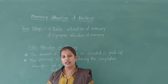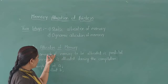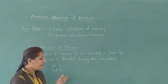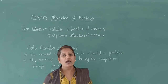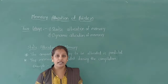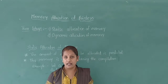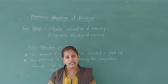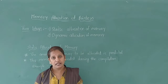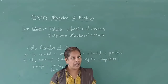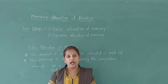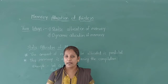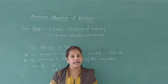In static memory allocation, the amount of memory to be allocated is predicted and pre-known. This memory is allocated during the compilation itself. The static memory allocation is done at the time of compilation, and the amount of memory to be allocated is predicted and pre-known. This advance-known memory allocation is called static memory allocation.